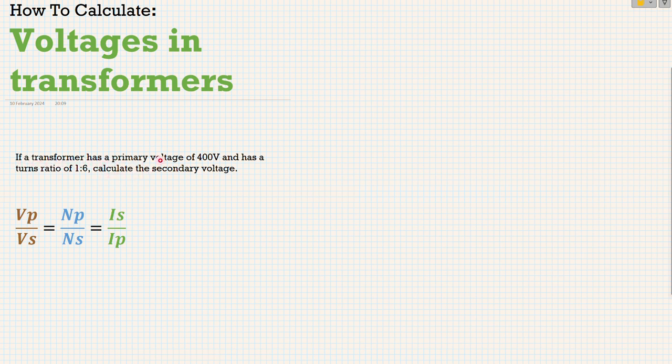Now if a transformer has a primary voltage of 400 volts, so that's this one here, it's given us the VP, primary voltage, and has a turns ratio of 1 to 6. So that's this section they've given us. Calculate the secondary voltage. They're asking for this, secondary voltage.